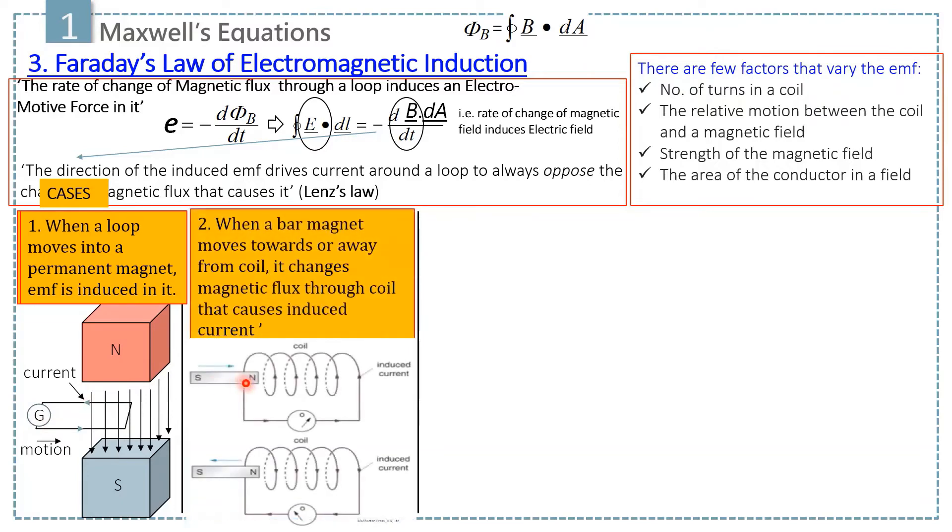In the second case, when bar magnet is at rest, no current is at the galvanometer. But when magnet moves towards coil, galvanometer indicates current. When it moves away from the coil, galvanometer shows current again, but this time in opposite direction.